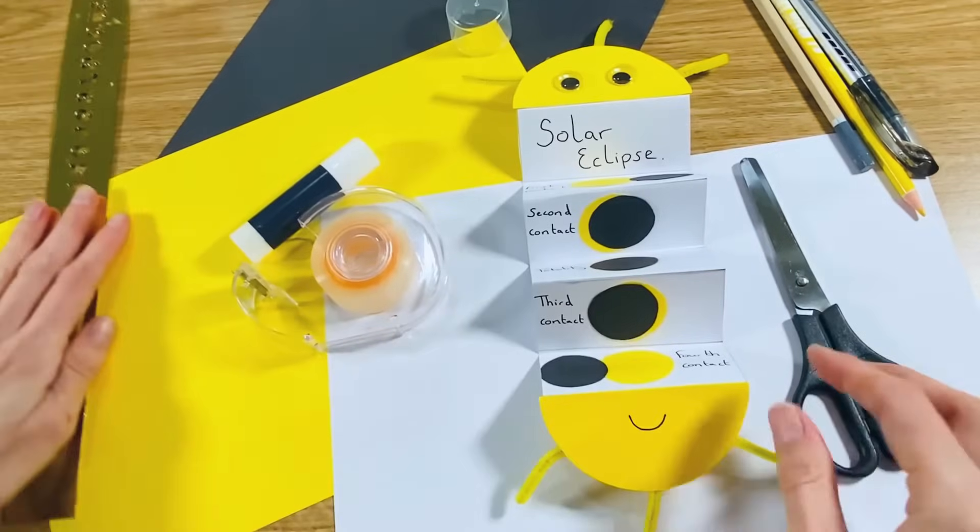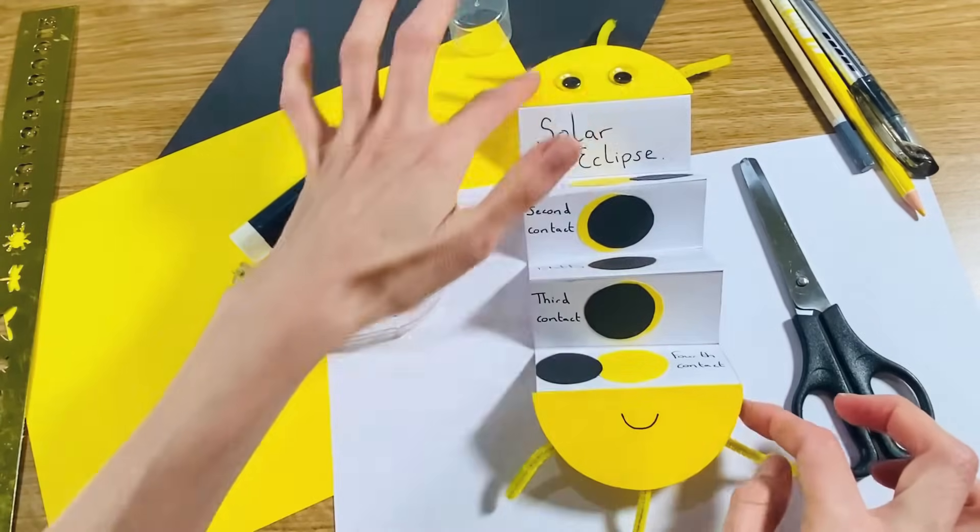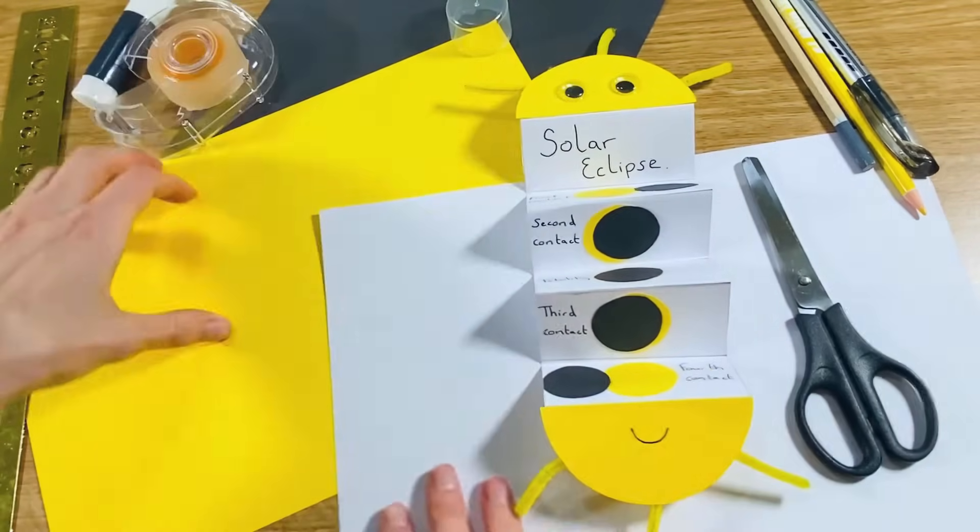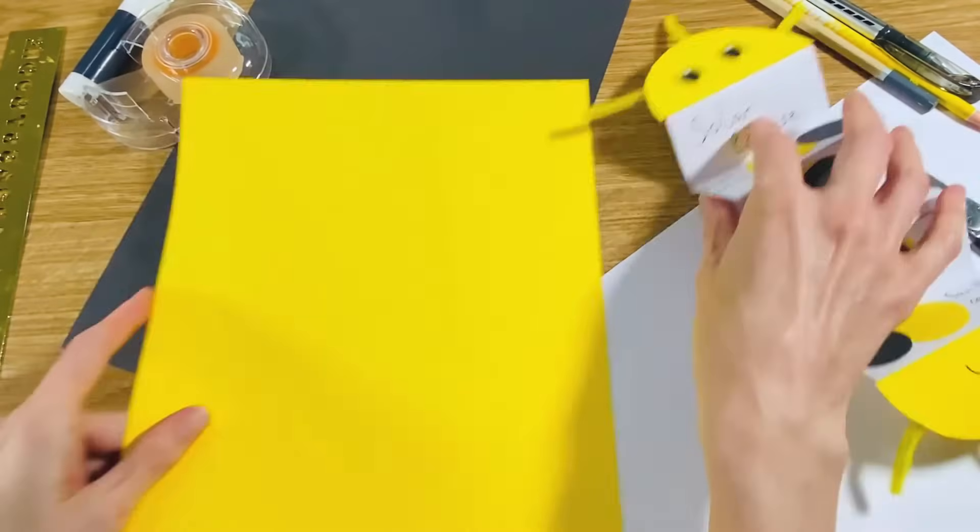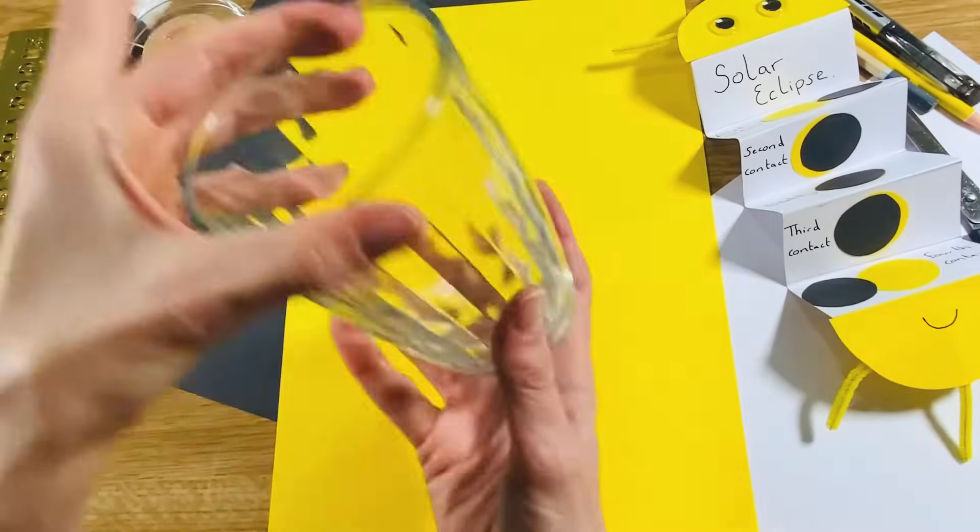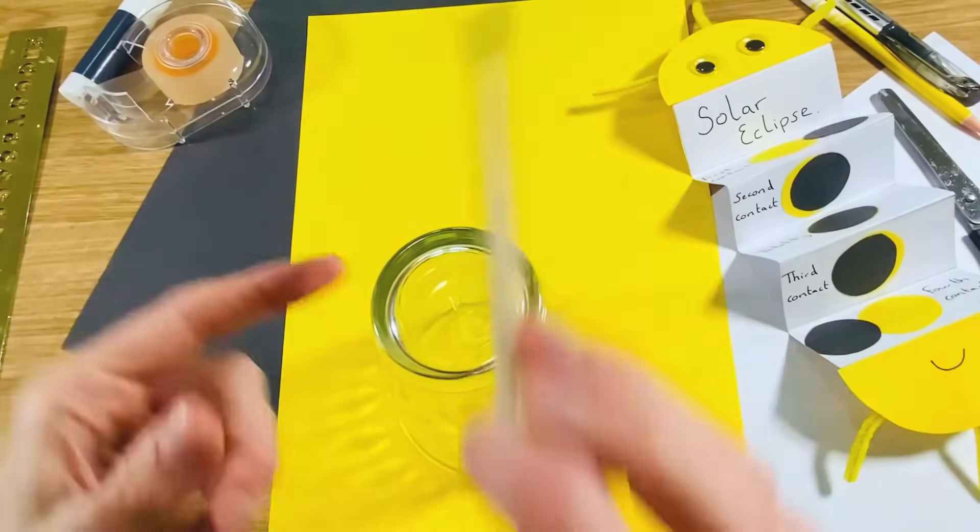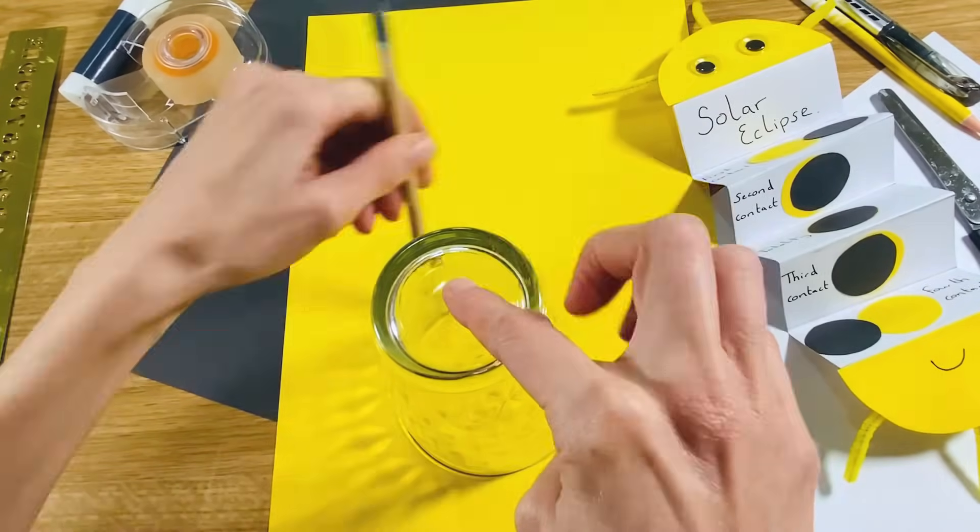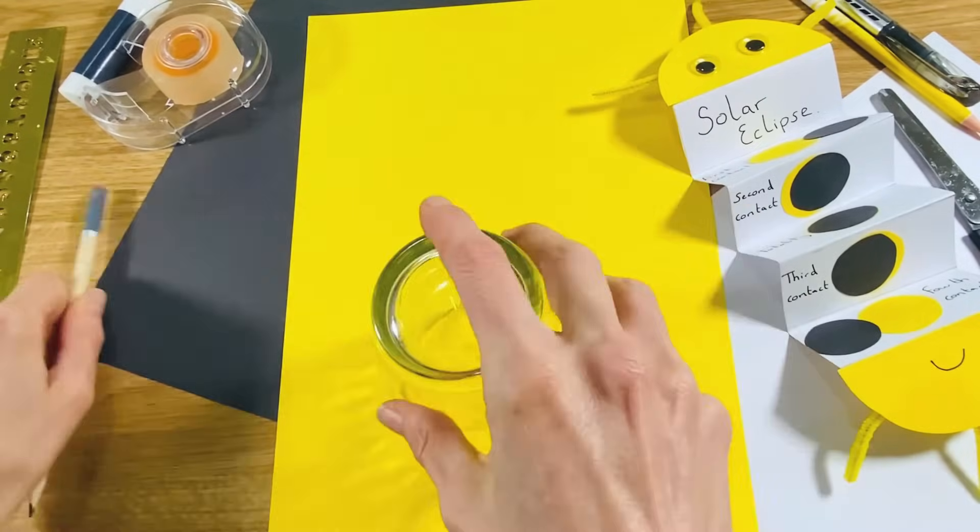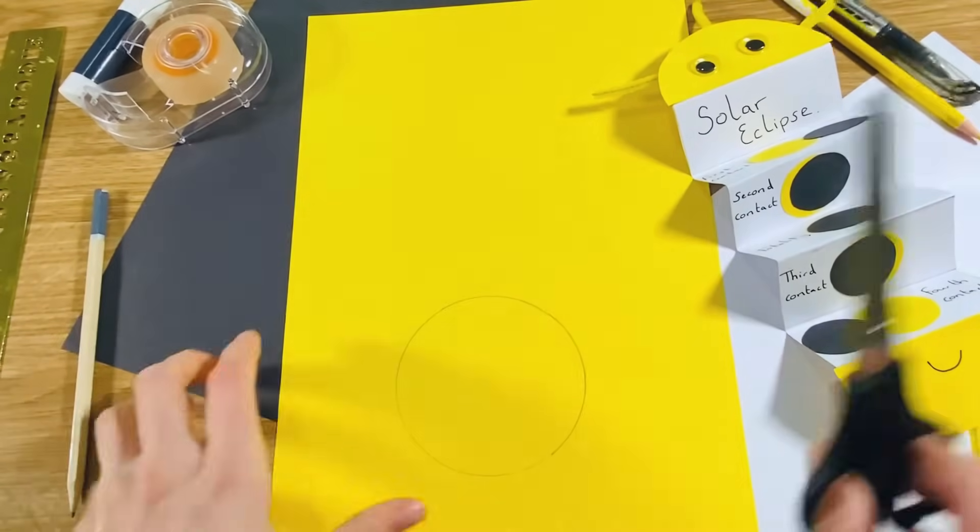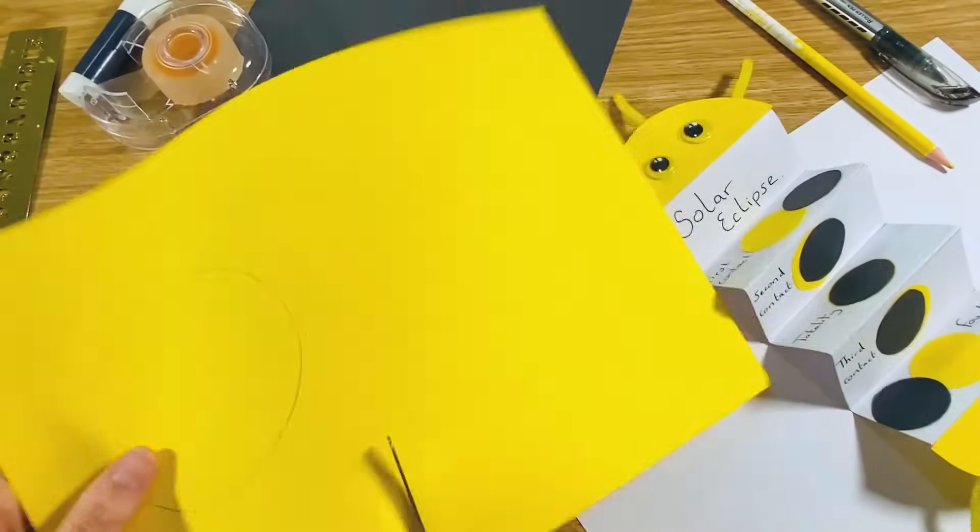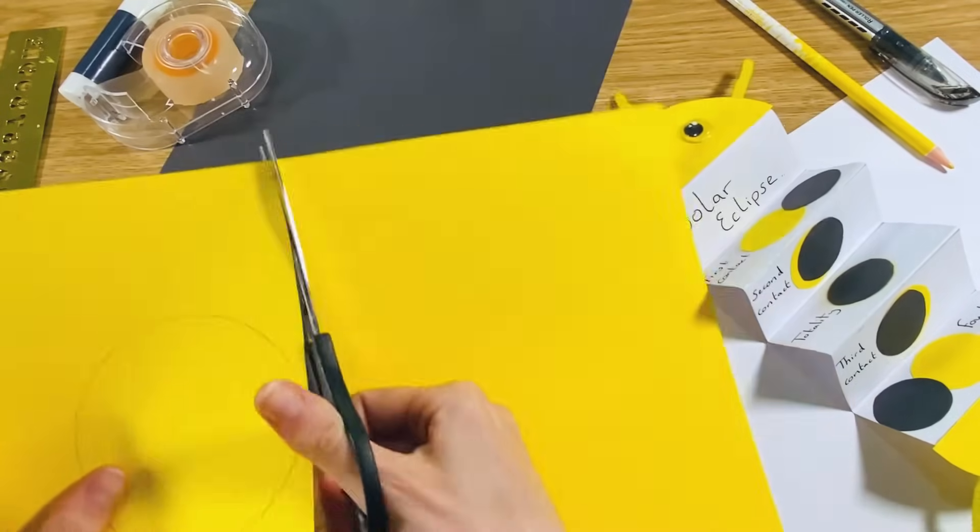First thing you're going to need to do is create the sun for the outside, so you'll take your yellow piece of card and then draw around the outside of the glass so that you've got a yellow circle, and then you'll need to cut that out.